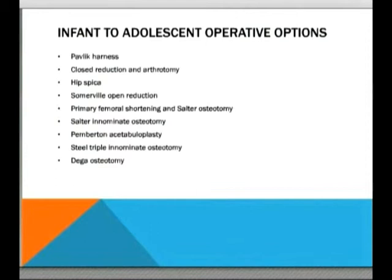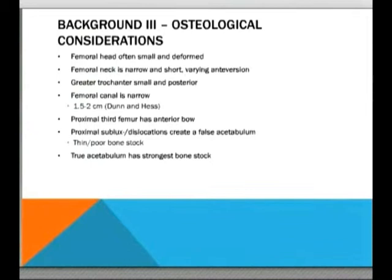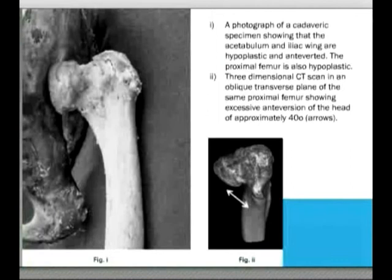When approaching this in an adult population — as a legacy of childhood DDH and attempts to correct it — distinct anatomical changes are found. The femoral head is small and deformed; the neck becomes narrow and short with varying degrees of anteversion. The greater trochanter shifts position, becoming smaller and more posterior. The femoral canal is much narrower than in other adult populations, and the proximal third of the femur can have an anterior bow. There can be subluxation or dislocation creating a false acetabulum with thin, poor bone stock, while the true acetabulum has the strongest bone stock. Images from the review article demonstrate the small femoral head, shorter neck, and anteversion.